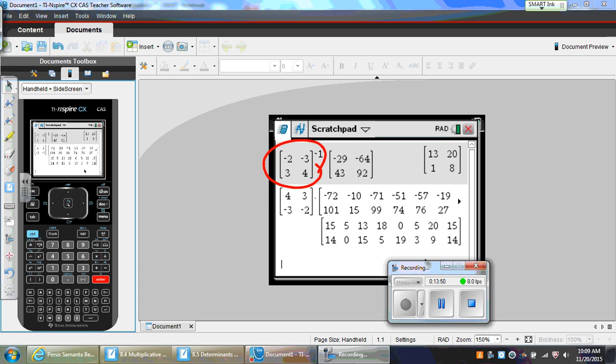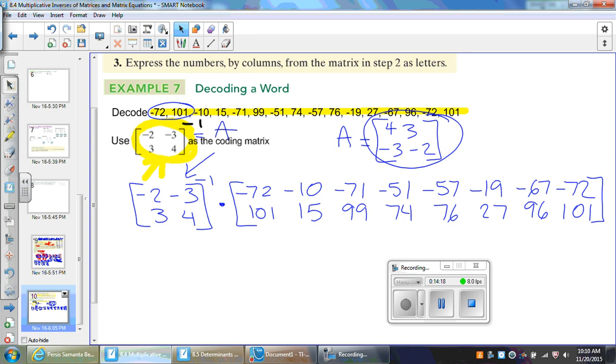So, after multiplying the two matrices, you should have a matrix that looks like that. First row should be 15, 5, 13, 18, 0, 5, 20, 15, 14, 0, 15, 5, 19, 3, 9, 14. Who didn't get that message? Did you get that message? Once you get that message, or those numbers, that will be your decoded message.